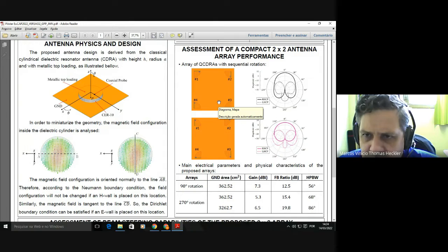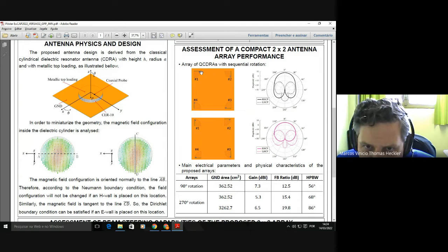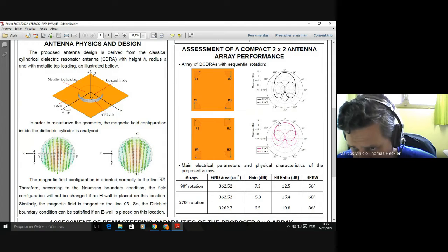The orientation changes strongly the shape of the radiation pattern. In this configuration we have this radiation pattern, and rotating the elements by 90 degrees, we have this configuration here, which represents a main beam with lower directivity in comparison to that.